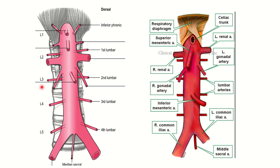In the second picture we can also see the celiac trunk, then the superior mesenteric artery, then the inferior mesenteric artery, then the median sacral artery — these four are the unpaired branches. The abdominal aorta also has nine paired branches.